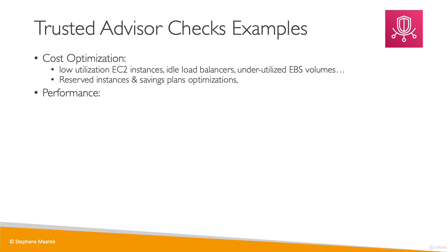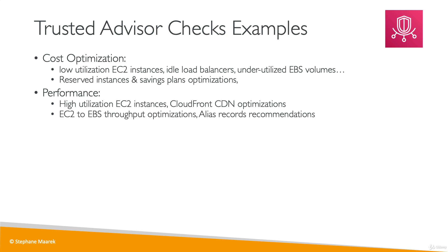For performance, you will get information around EC2 instances with very high utilization — maybe because they are over-utilized — as well as CloudFront CDN optimizations. It will also show you performance optimizations from linking EC2 to EBS, as well as alias record recommendations on your DNS.